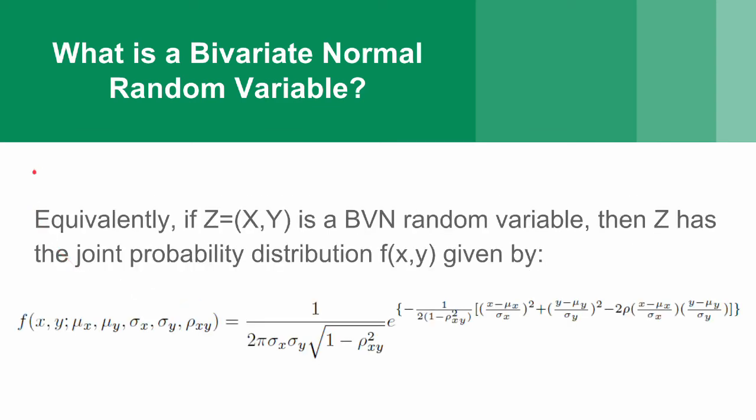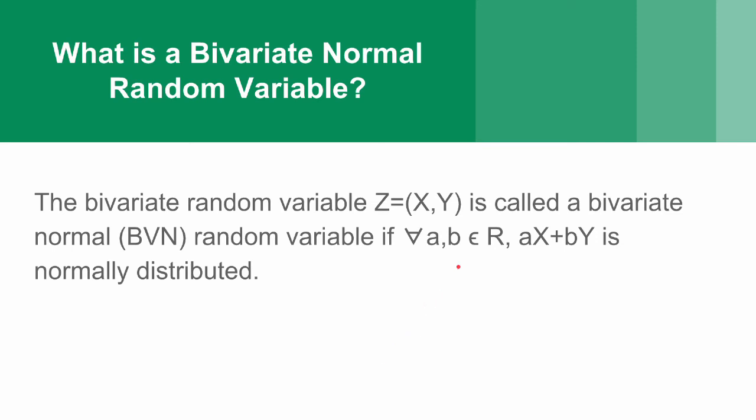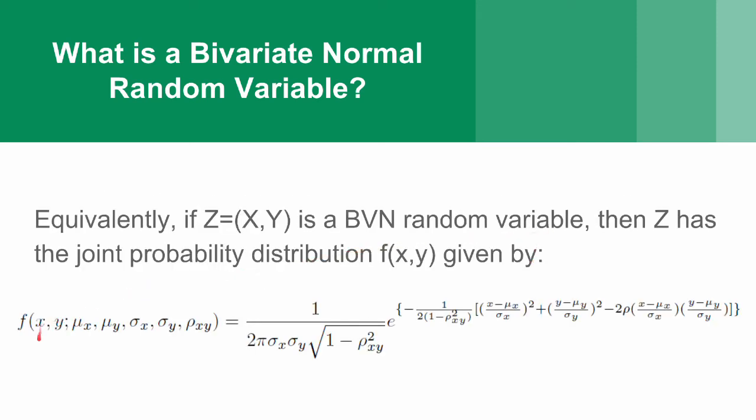This is equivalent to saying that if z equal xy is a bivariate normal random variable, then z has the joint probability distribution given by this gigantic function down here. Now, these things are equivalent, meaning you can go from this giant function back to this statement here, or you can start with this statement here and show that this is true.